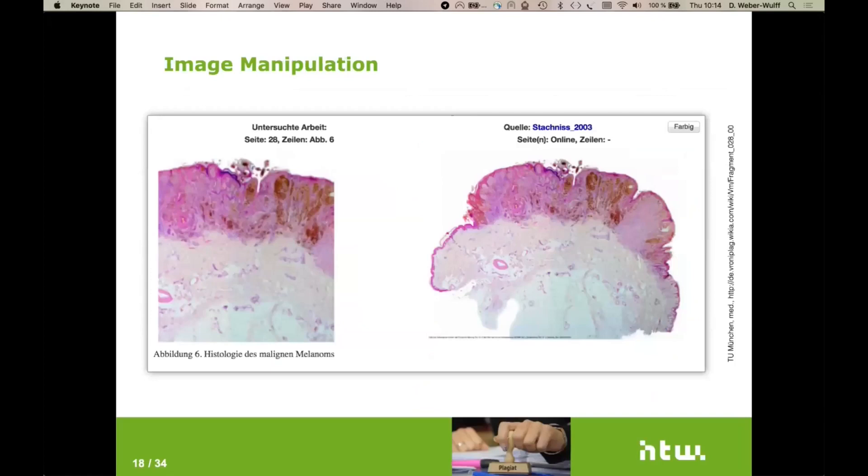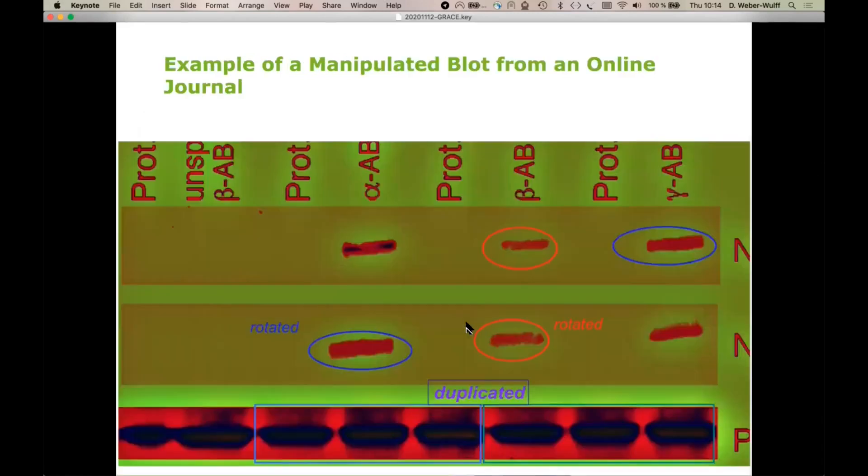Just a brief excursion into non-textual things. This is from a doctoral dissertation at the TU in Munich, where a nice example of histology image was just cut out and used as if the student had done this herself. Although the image that she used, if you look very closely down here, actually had a source given where this data was taken from. And this disappears, of course, as the image is being cut out here.